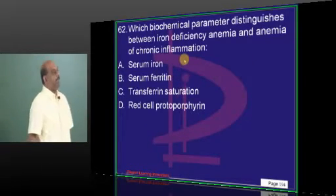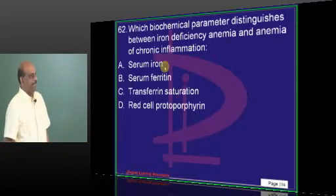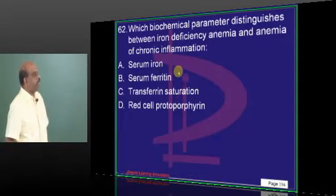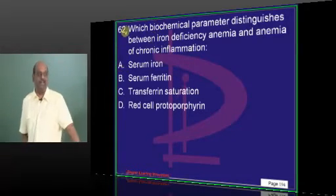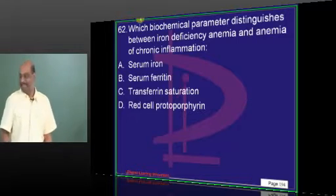Now, iron deficiency anemia of chronic inflammation. You need to tell the answer. Your answer? Transferrin. You thought transferrin? No problem. There may be a lot of transferrin group among the online audience.